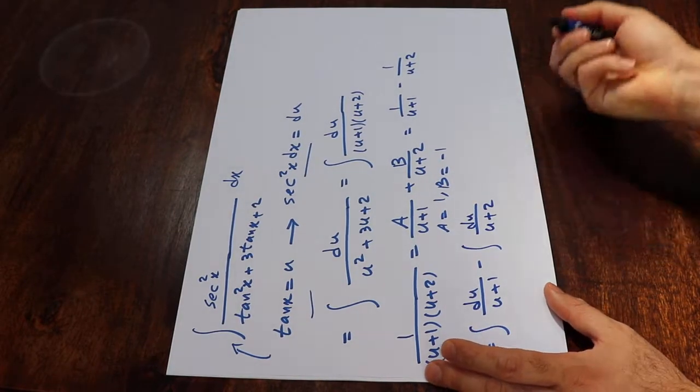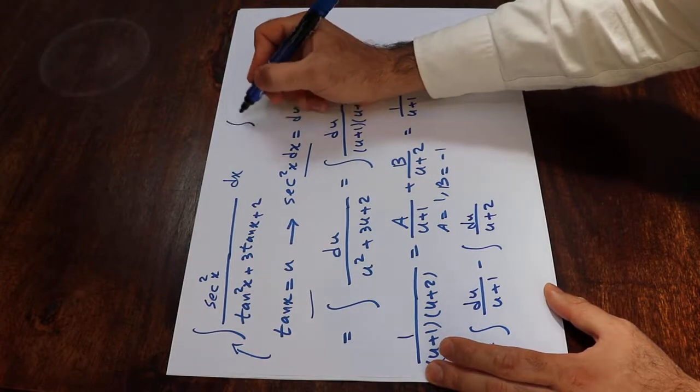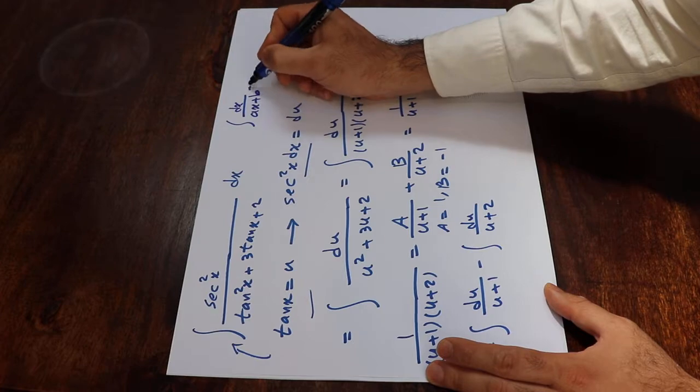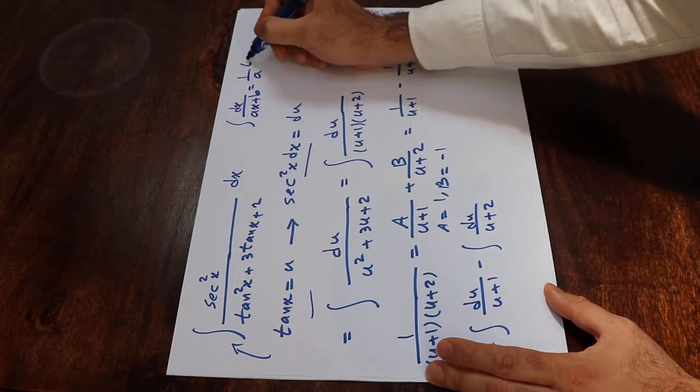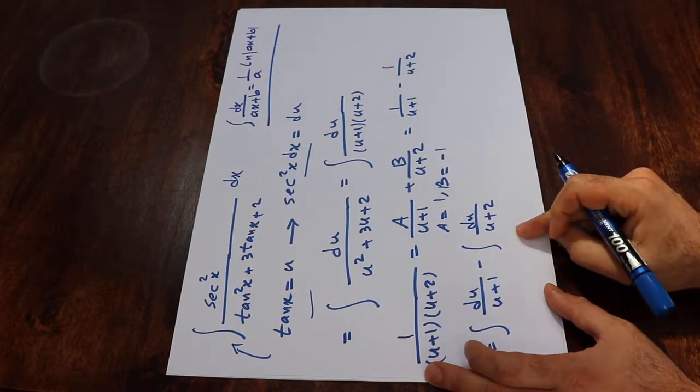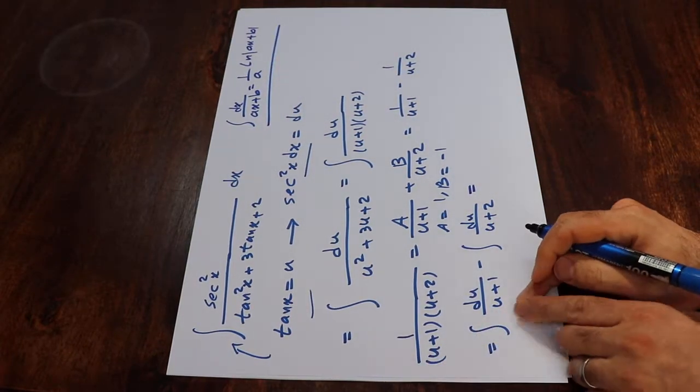So from table of integrals, you should know that the integral of dx divided by ax plus b is equal to 1 divided by a times ln ax plus b. This is the formula that we will use here to calculate this integral.